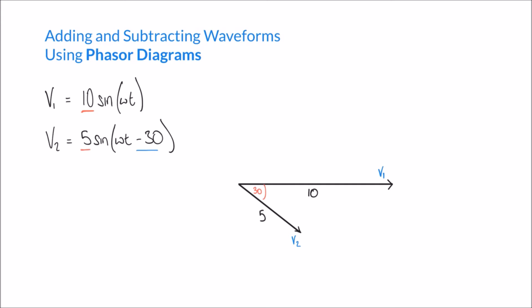Now I've added my second phasor for V2. V2 only has an amplitude of 5, so the length of V2 is 5. V2 also has a phase shift of minus 30 degrees, and a negative phase shift means a downwards tilt from the horizontal — so we see a 30-degree tilt downwards for V2.